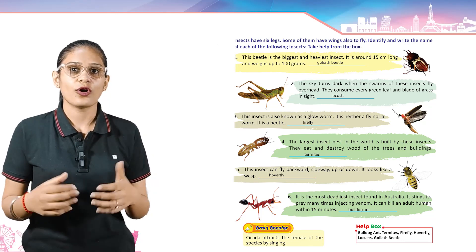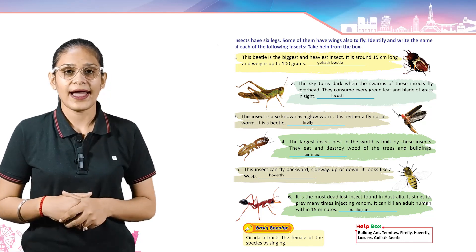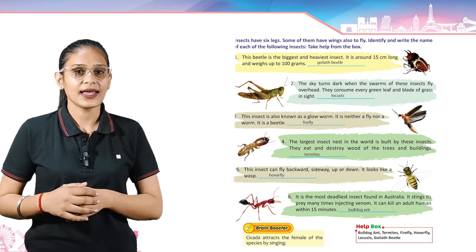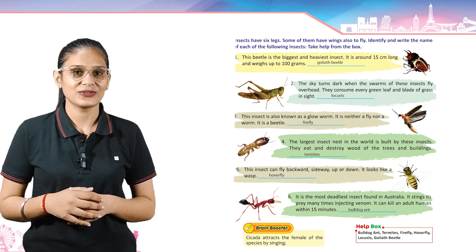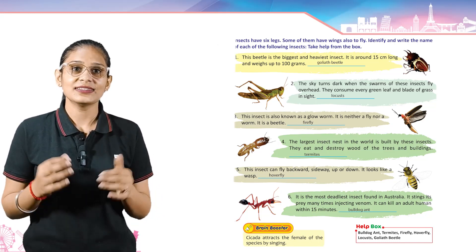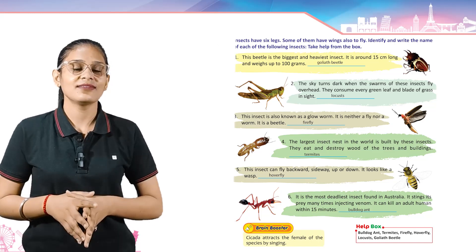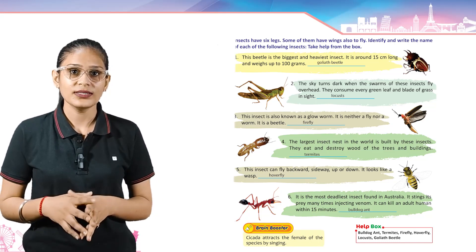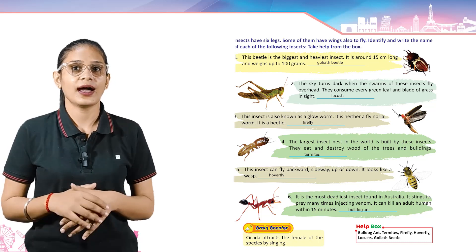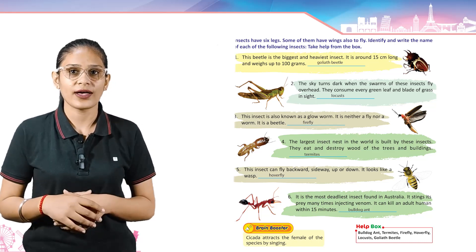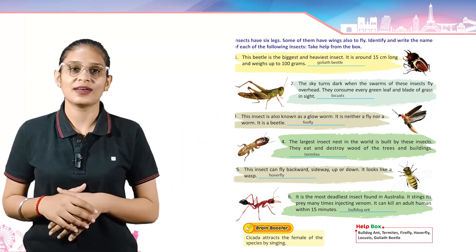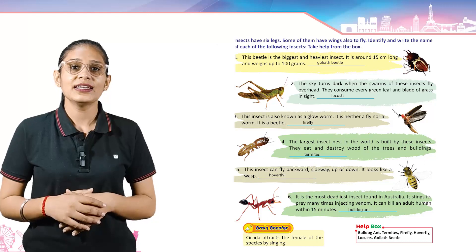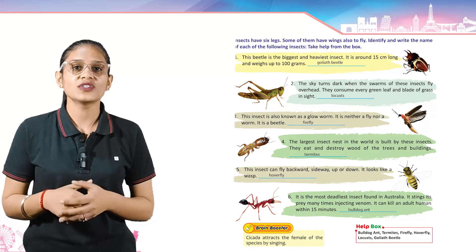Come to the next. The largest insect nest in the world is built by these insects. They eat and destroy the wood of trees and buildings. Its answer is Termites.